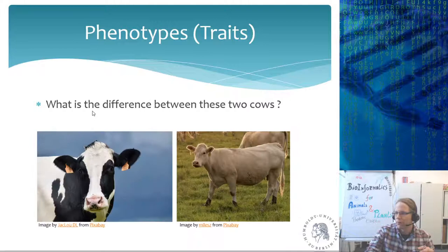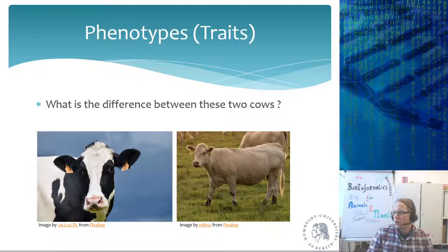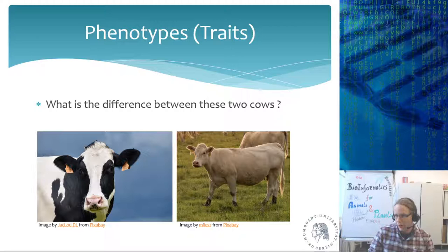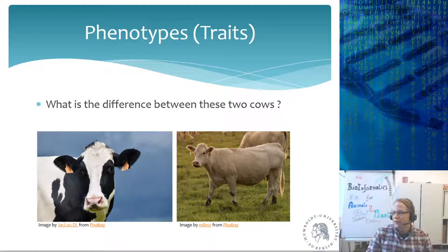A question for you: I'm showing two pictures of cows. On one side we see a black-and-white cow like you see all over Germany, and on the other side a different type of cow. What is the difference between these two cows? The most obvious difference is the coloration pattern and expression of pigmentation — but there is a very economical phenotype that classifies these two cows.